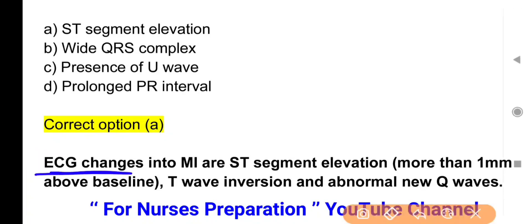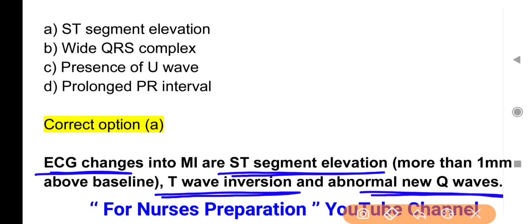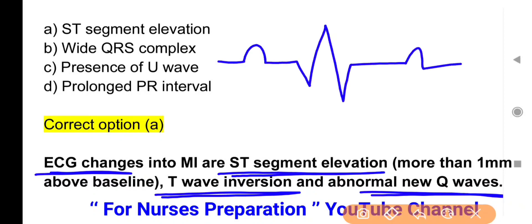जब भी किसी person को Heart Attack / MI Attack होता है, ECG करवाने पर ST Segment का Elevation देखने को मिलेगा जो baseline से लगभग 1 mm होता है, T Wave Inversion हो जाती है यानि opposite direction में आने लगती है, और Q Wave abnormal होती है। Normal ECG में P, Q, R, S, T Wave देखने को मिलती हैं।